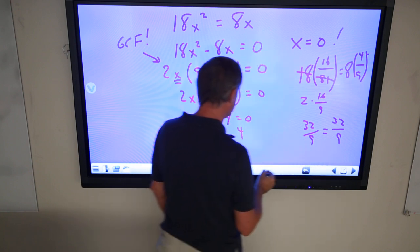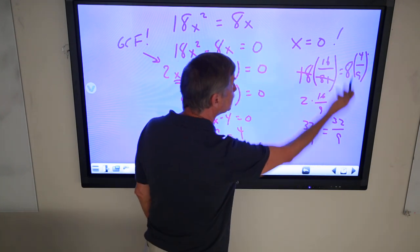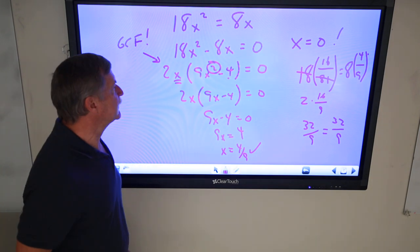Aha, it works. 32 over 9 equals 32 over 9, trickier with the fractions.